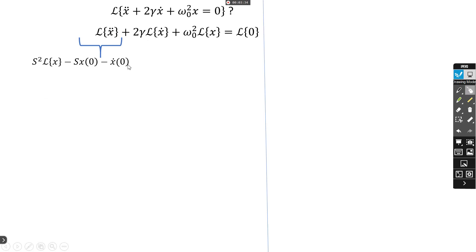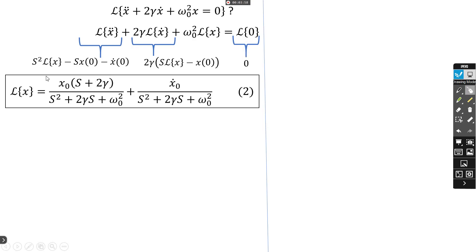Same for Laplace x dot, it gives 2γ times (s Laplace x minus x(0)). On the other side, Laplace zero is zero. In summary, if we put Laplace x as common factor, we get expression number 2.